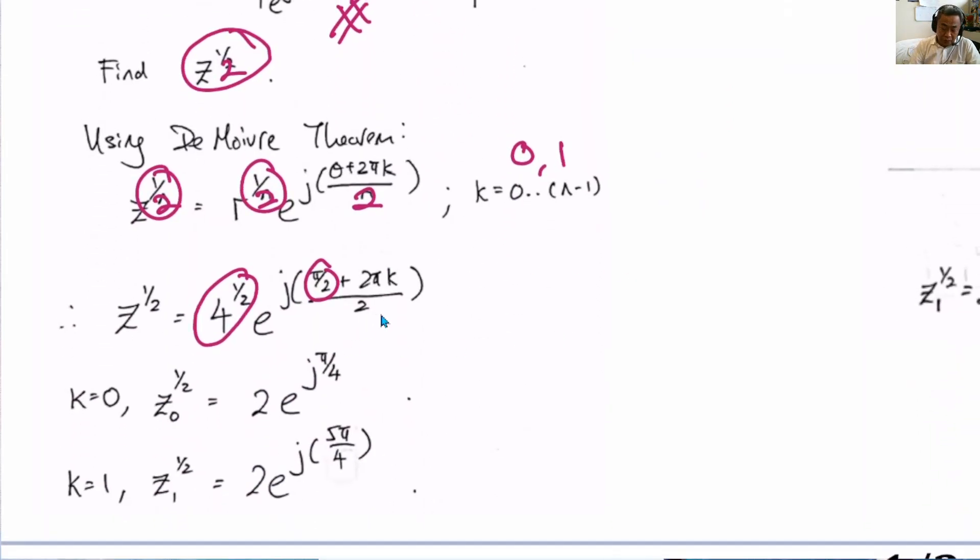So we now want to substitute for k equals to 0 and k equals to 1. When k equals to 0, this π/2 divided by 2 is π/4. For the modulus, 4 root 2 is 2. So this is the first solution.